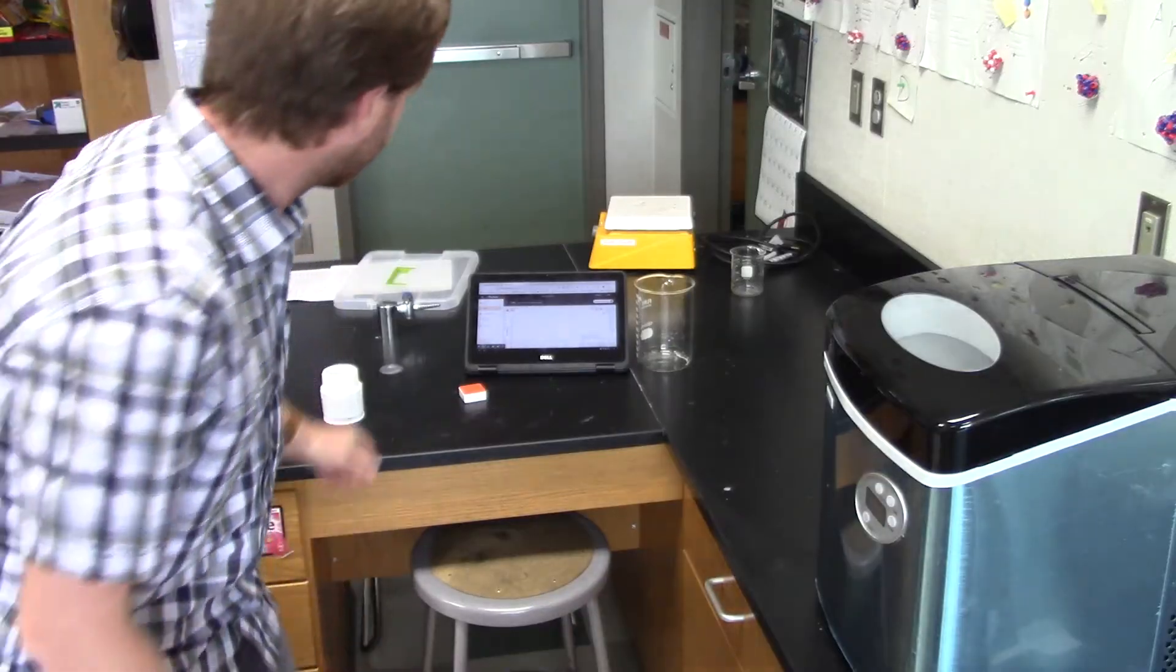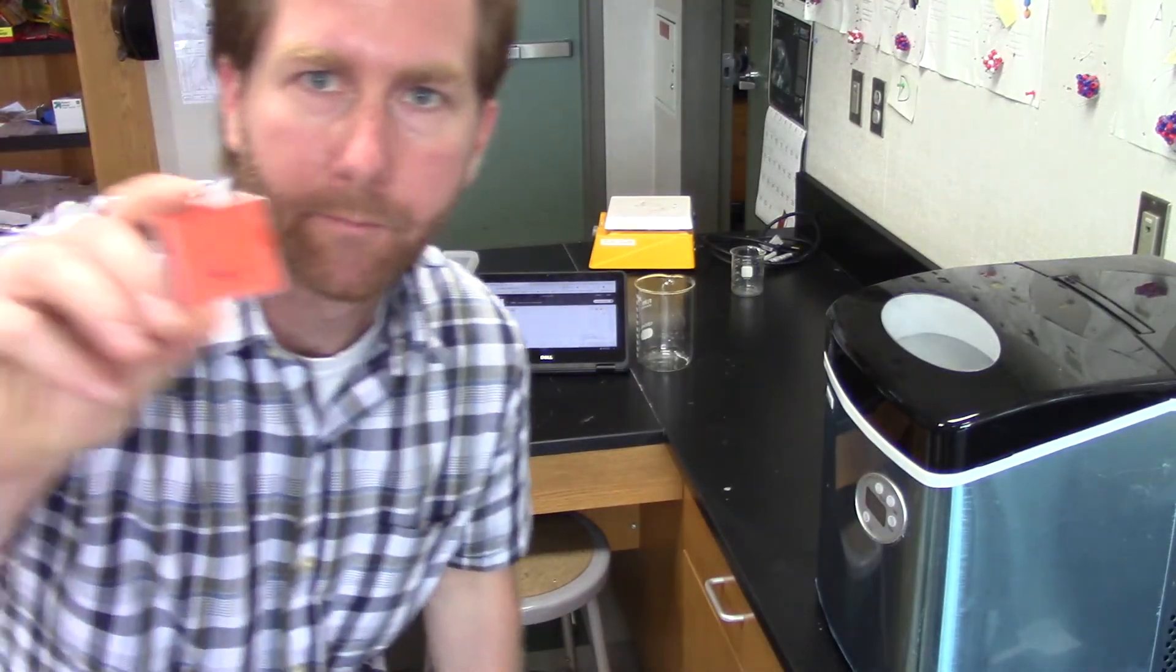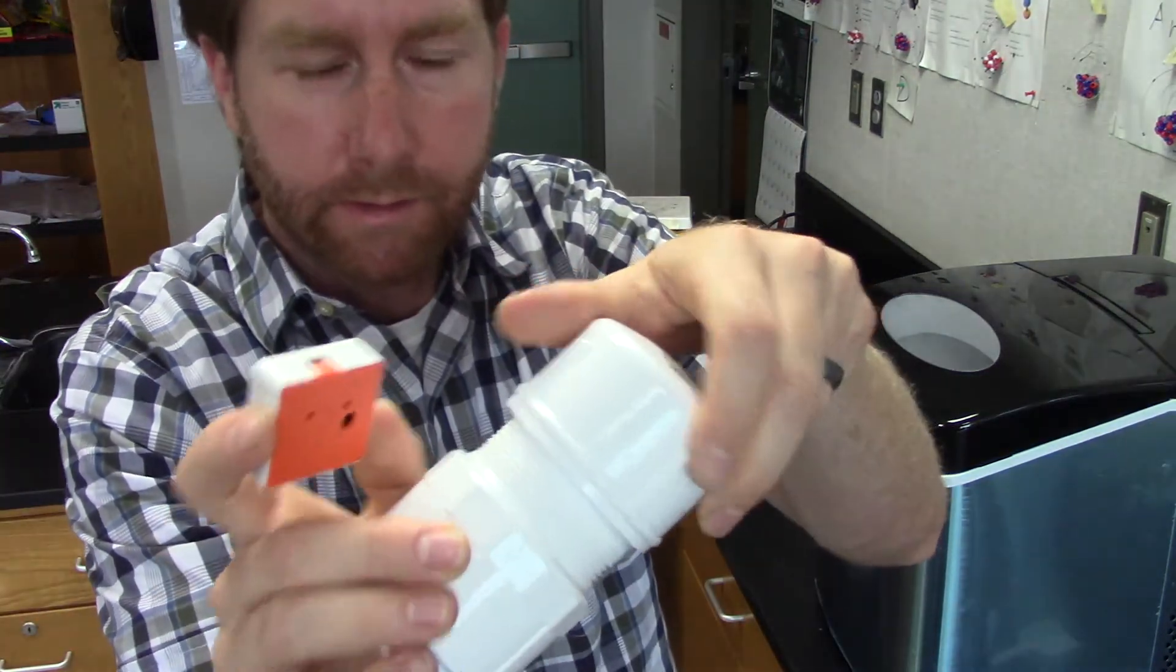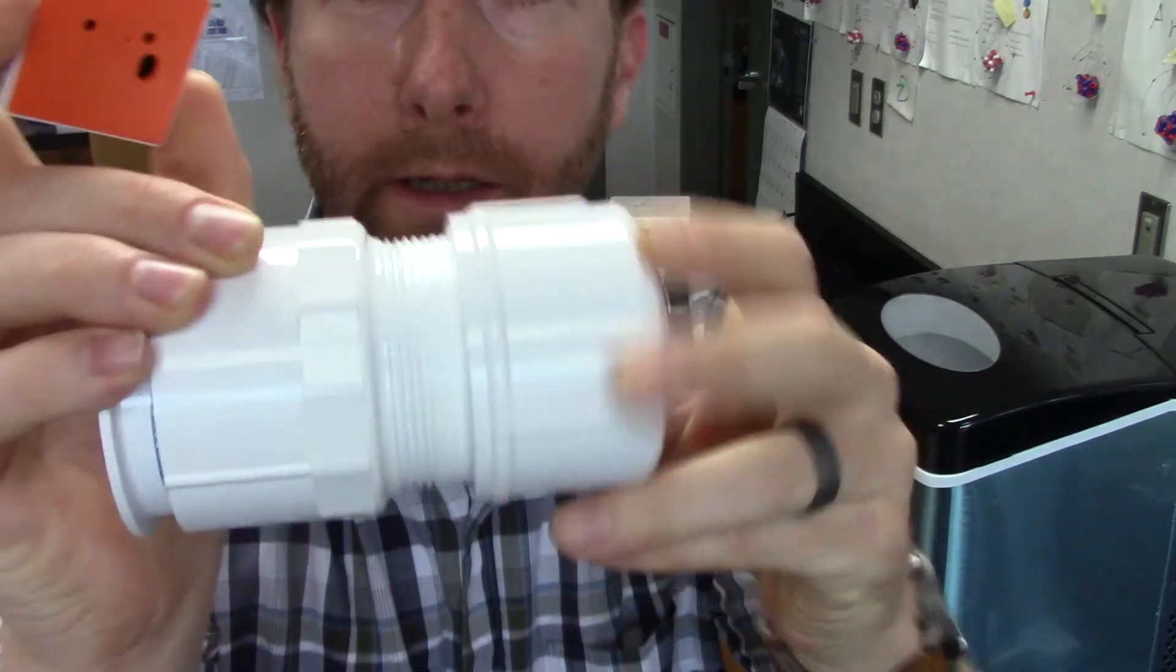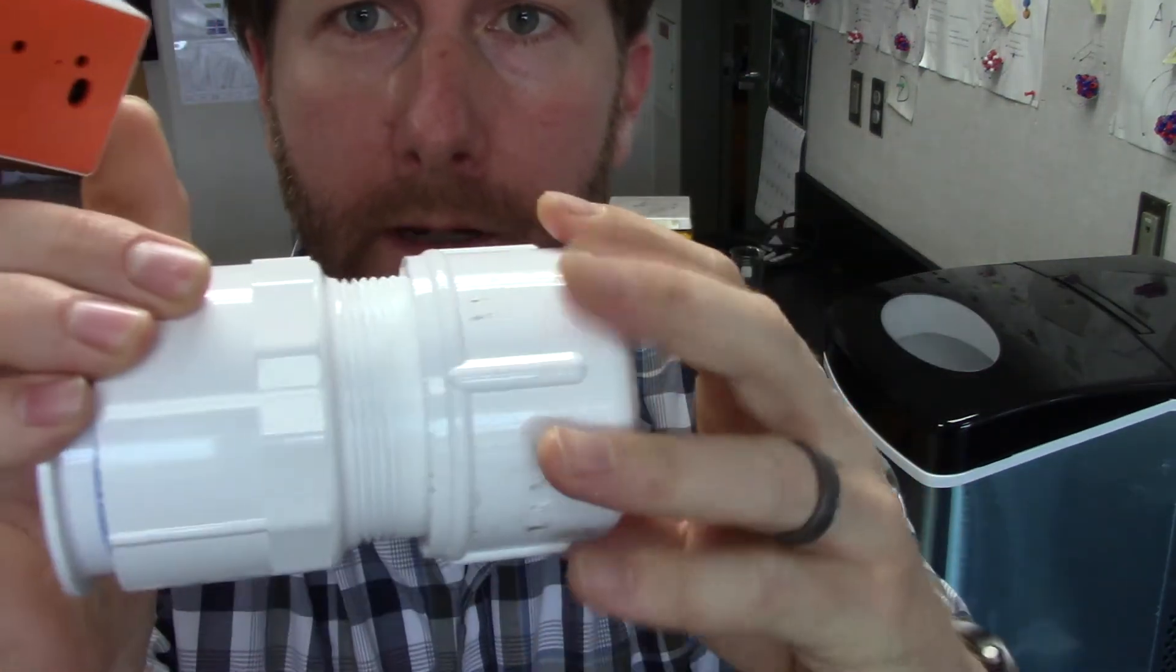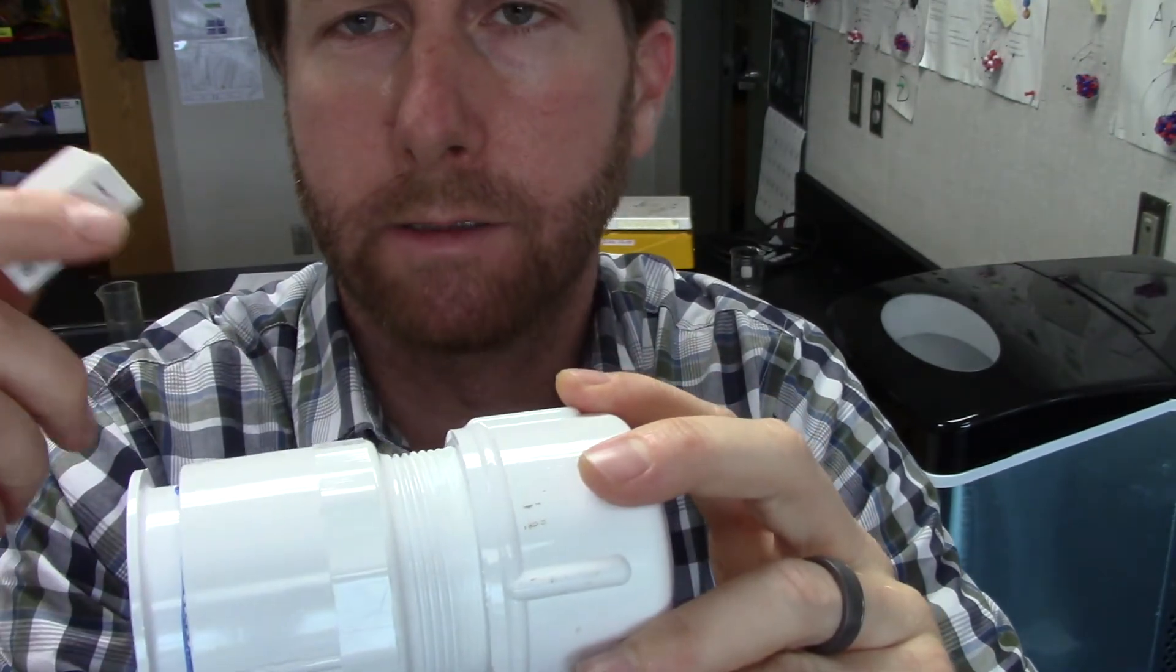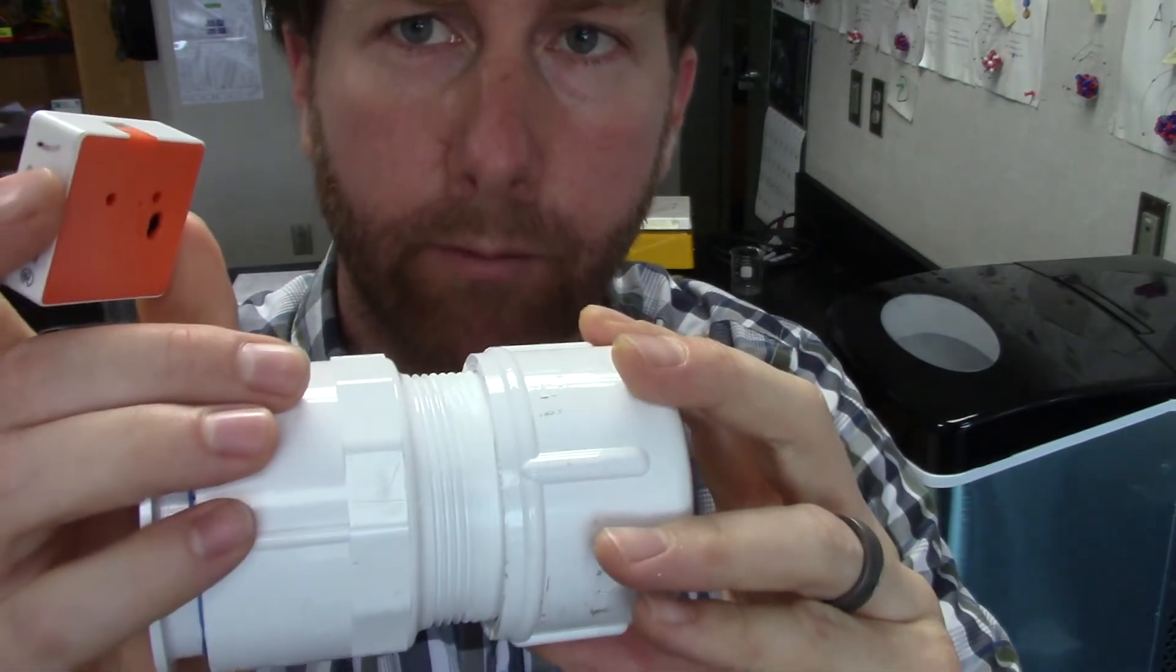So we have one of these Pocket Labs here, and we're going to put that in a canister, seal it up in this canister so it should be, in theory, airtight. And we're going to put this into ice water and see what changes as the temperature decreases in the ice water bath.